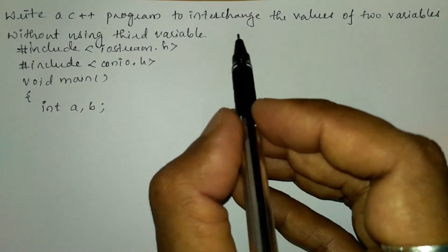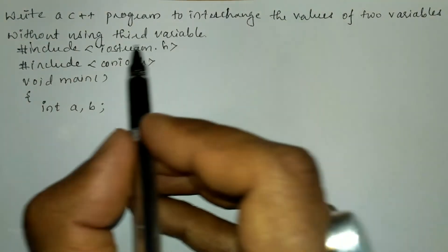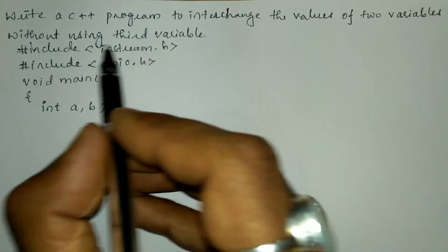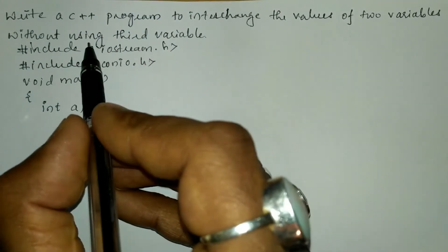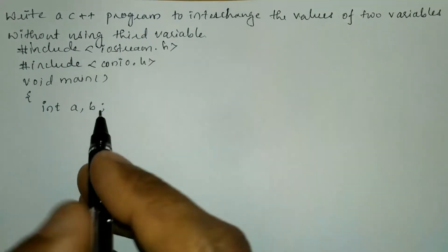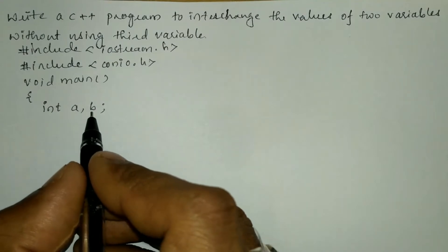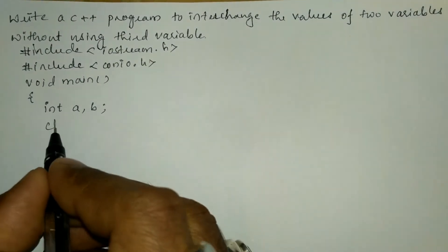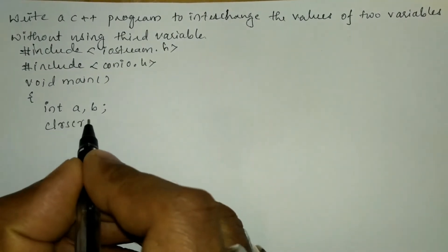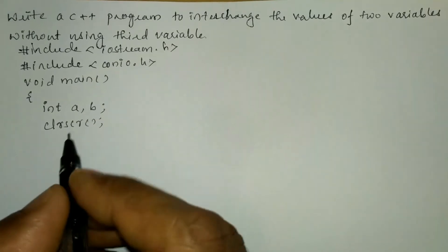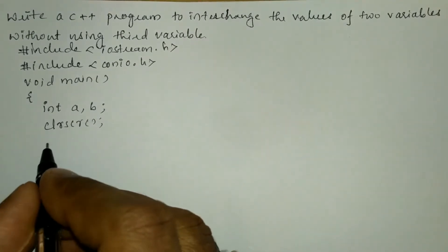The purpose of this program is to interchange two variables without using a third variable, so we have to take only two variables. After declaring the two variables I am going to write the clrscr function, which is used to clear the screen.